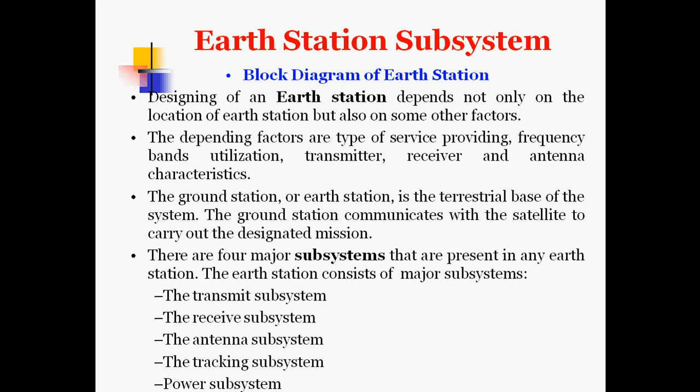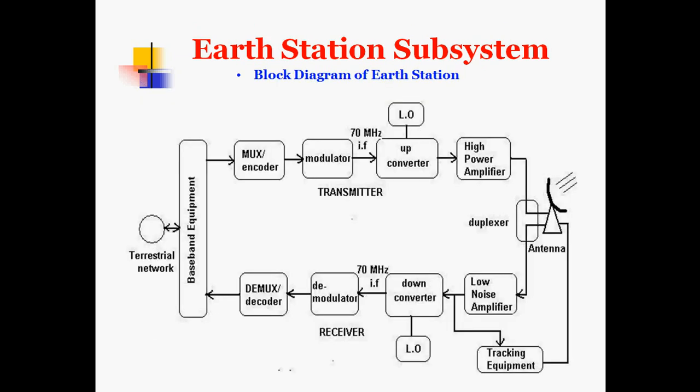The ground station or earth station is the terrestrial base of the system. It communicates with the satellite to carry out the designated mission. There are four major subsystems present in any earth station: the transmit subsystem, the receive subsystem, the antenna subsystem, the tracking subsystem, and the power subsystem.